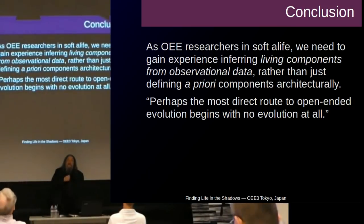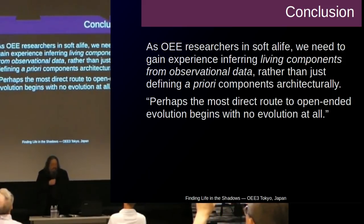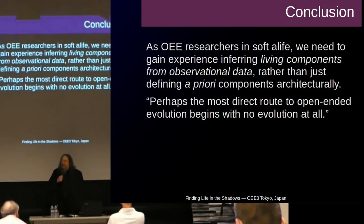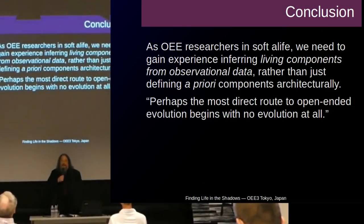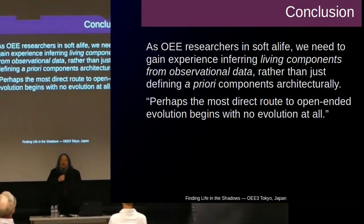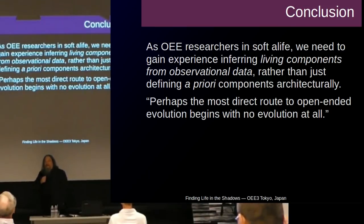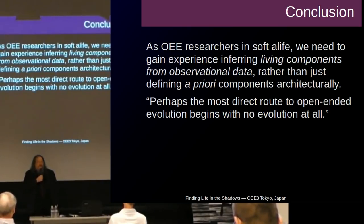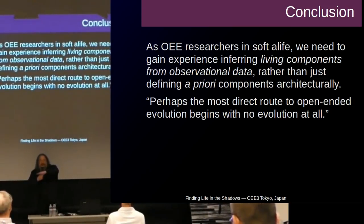The claim and takeaway is: if you're an OEE researcher — open-ended evolution in soft artificial life — we should get over the habit of implementing creatures. We should stop asking 'what is a creature? A creature is a class, it has a genome, which is also a class, which has data, which is an array,' and so on. Because every time we do that, we make it harder to see something open-ended, since we've privileged the representation from the start.